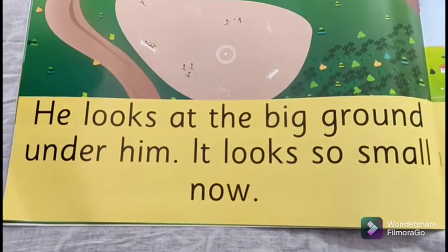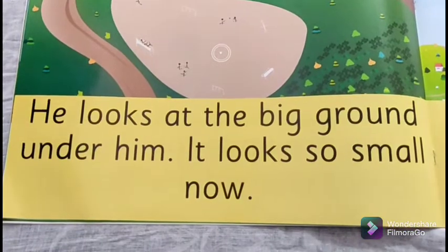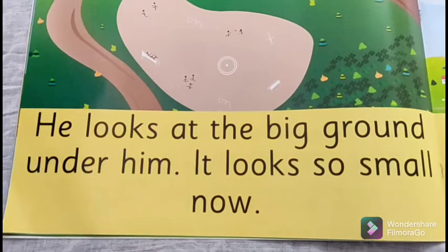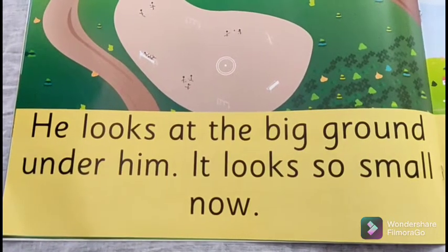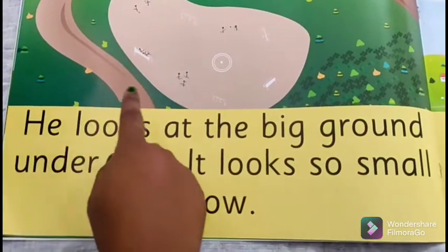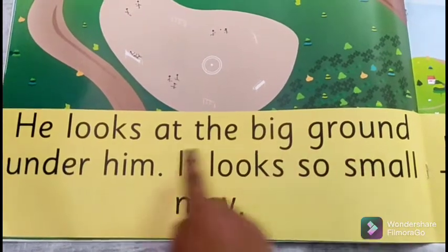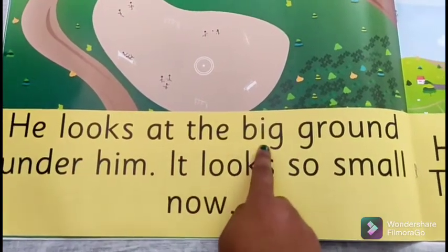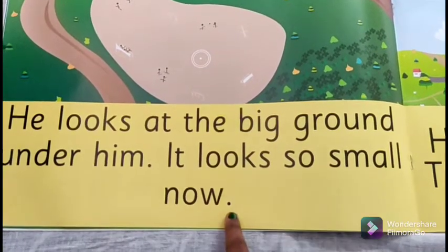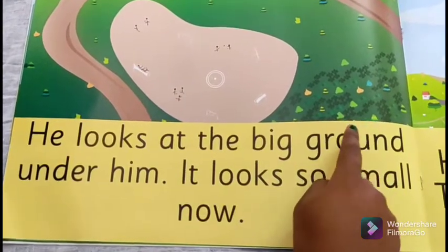When does this happen? Can you read me or show me the line that says this? This happens in the sky. He was riding on a hot air balloon, and from there he can see the ground. 'He looks at the big ground under him. It looks so small now.' From the sky it looks so small — a very tiny object.